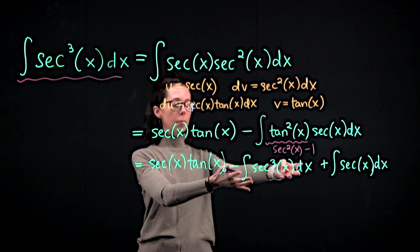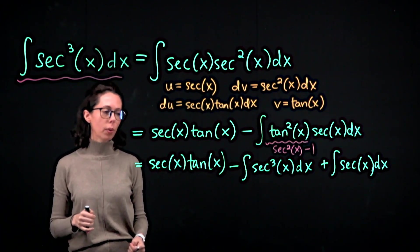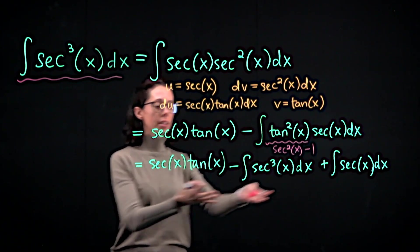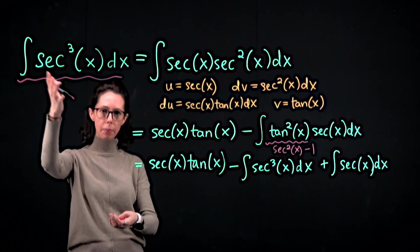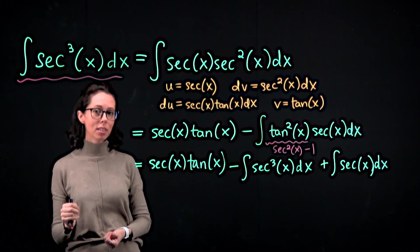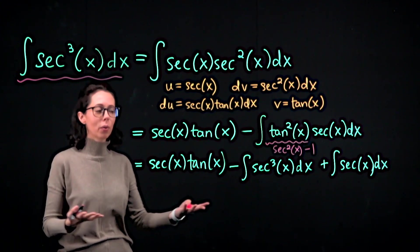This means that if I collect both of those expressions on the same side of the equation, we're going to move this over and pick up two copies of what we're trying to find on the left. We're basically going to solve for it like it's a variable in an equation.